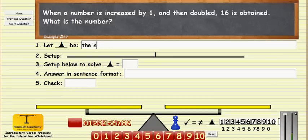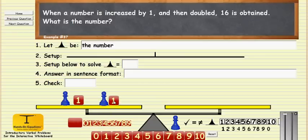Let pawn be the number. We're told that when the number is increased by 1 and then doubled, that means we have to set up the number again, increased by 1. 16 is obtained. So this then would be the physical setup for this example.